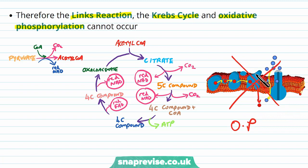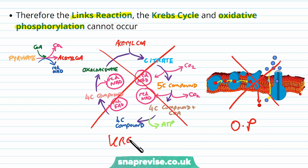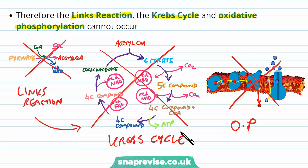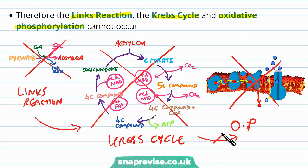Because of these two reasons, the link reaction, the Krebs cycle, and oxidative phosphorylation all stop occurring. Oxidative phosphorylation stops because there's no oxygen to mop up the hydrogen ions; the Krebs cycle stops because reduced NAD isn't losing its hydrogens to reform oxidized NAD; and because the Krebs cycle isn't running, acetyl-CoA builds up and the link reaction stops too. It acts like a conveyor belt — without oxygen the whole thing stops.